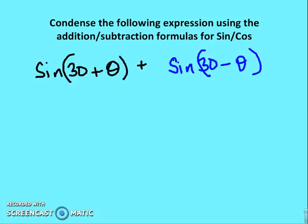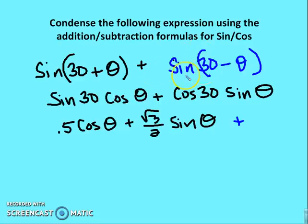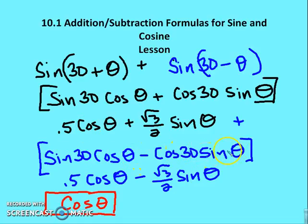Now condense the following expression using the addition and subtraction formulas. Sine(30° + θ) = sine 30° · cosine θ + cosine 30° · sine θ = (1/2)cosθ + (√3/2)sinθ. And sine(30° − θ) = (1/2)cosθ − (√3/2)sinθ. Combining like terms gives cosine θ.